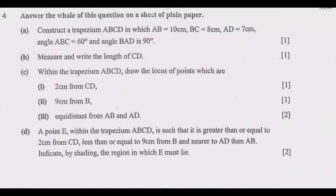Let us look at the question. Answer all of this question on a sheet of plain paper. Part A: Construct a trapezium ABCD in which AB equals 10 cm, BC equals 8 cm, AD equals 7 cm, angle ABC equals 60 degrees, and angle BAD equals 90 degrees.